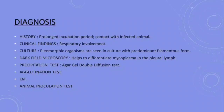Moving forward to the diagnosis of this disease. Diagnosis is based on the following considerations. Number one: History — this includes prolonged incubation period and history of contact with infected animals. Number two: Clinical findings — referring to the typical signs of respiratory involvement. Number three: Culture — includes culture of the organism in special media. Number four: Dark-field microscopy — this helps to differentiate mycoplasma in the pleural lymph.